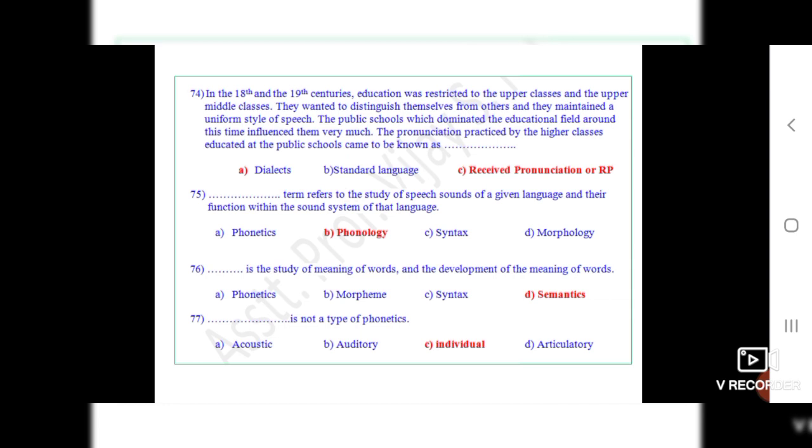Question 77: Dot dot is not a type of phonetics. The correct option is C, individual.